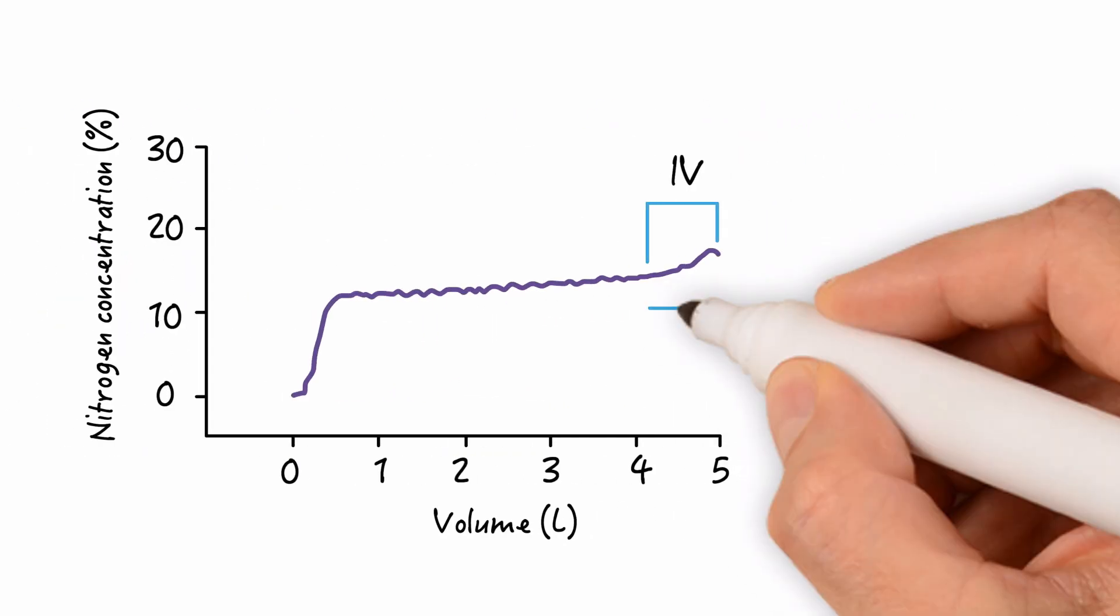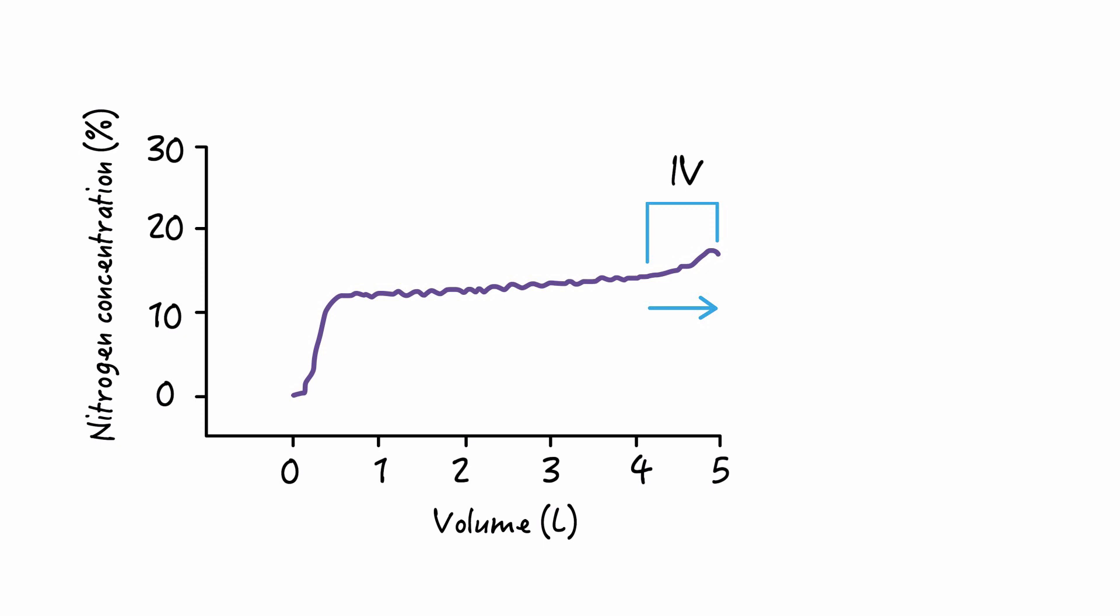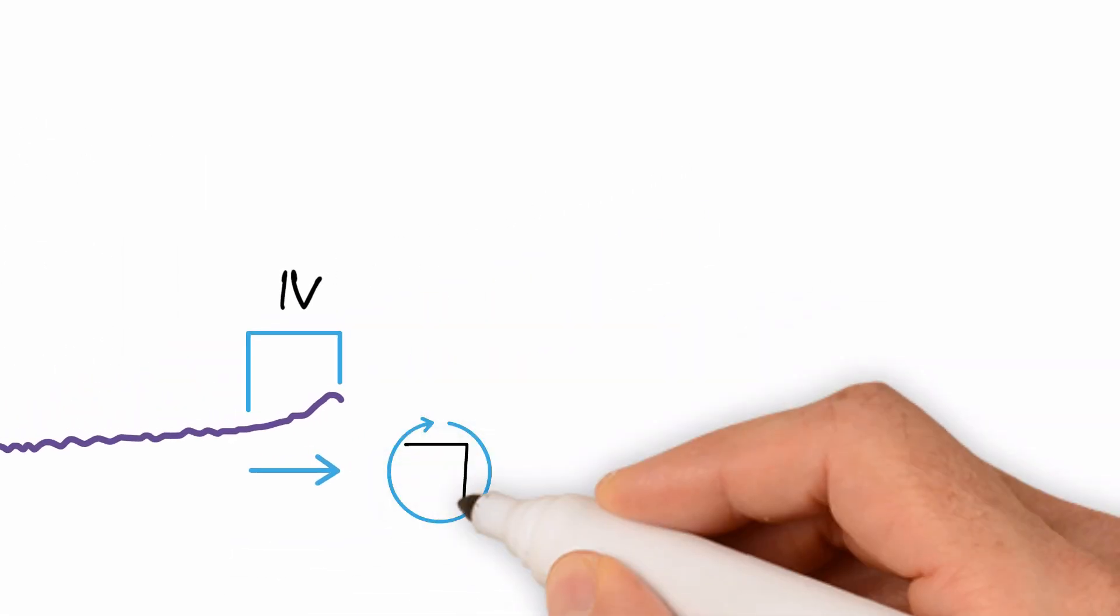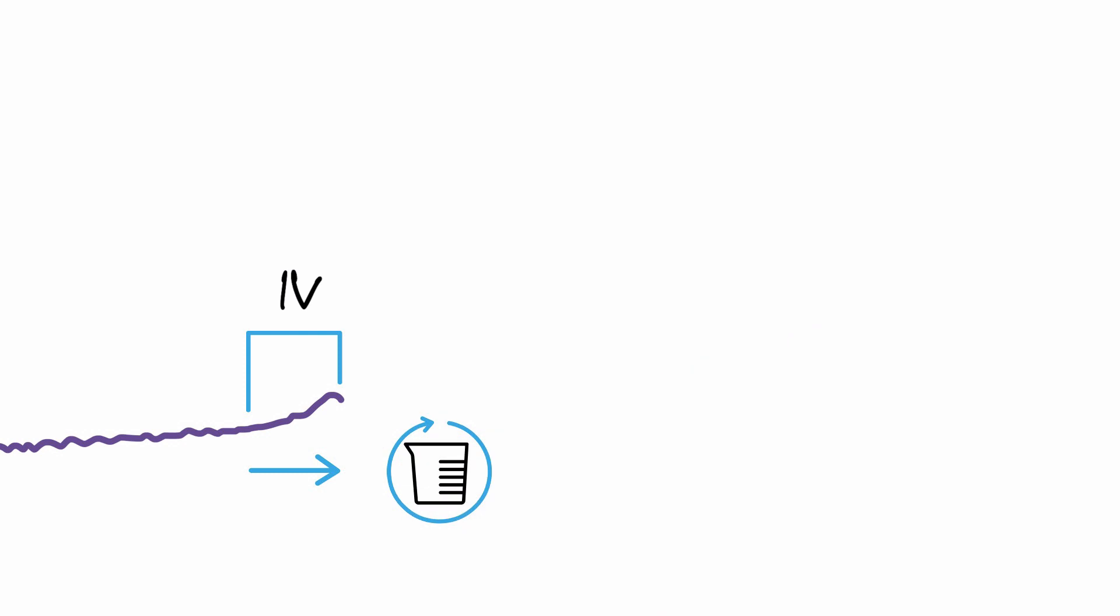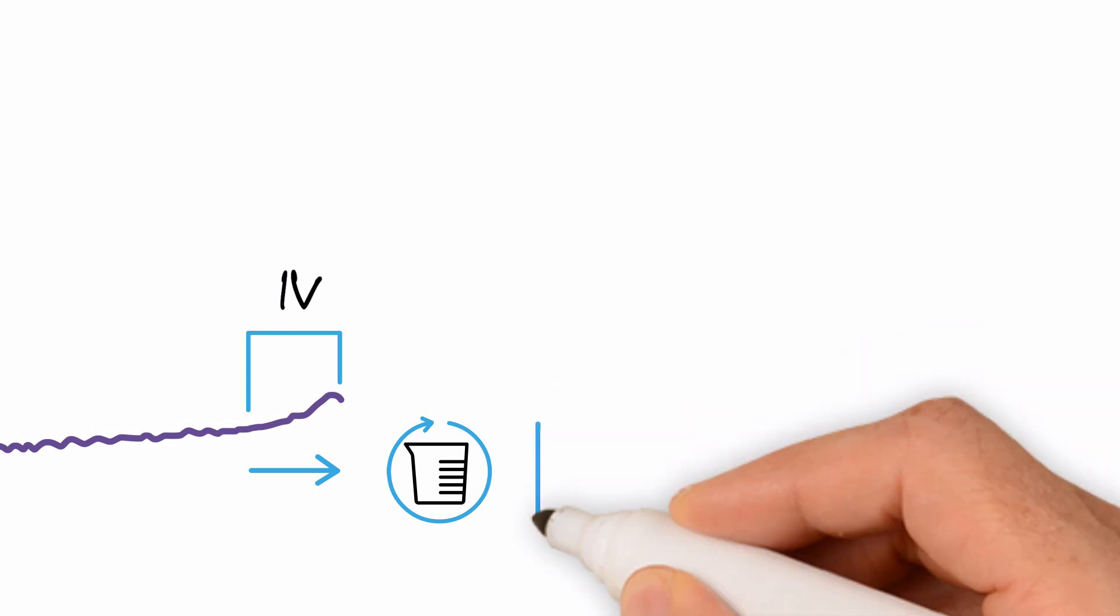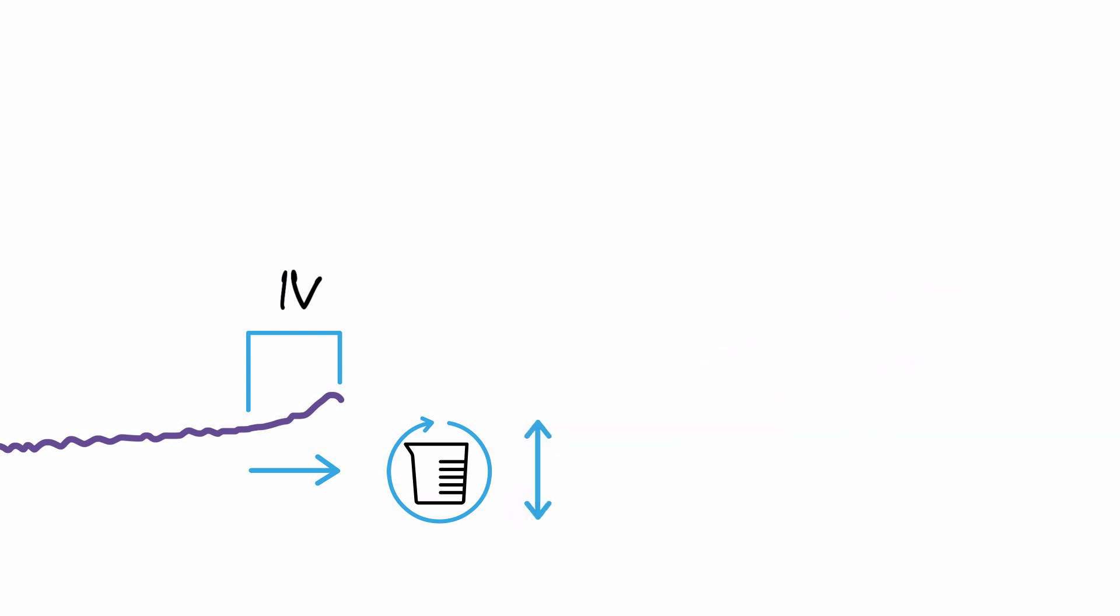The exhaled volume from the onset of phase 4 to the end of the expiratory maneuver is known as closing volume. Remember, this is the portion of the exhaled air after the closure of the small airways, so a change in this value reflects changes in the small airways. Normal closing volume is about 10% of vital capacity.